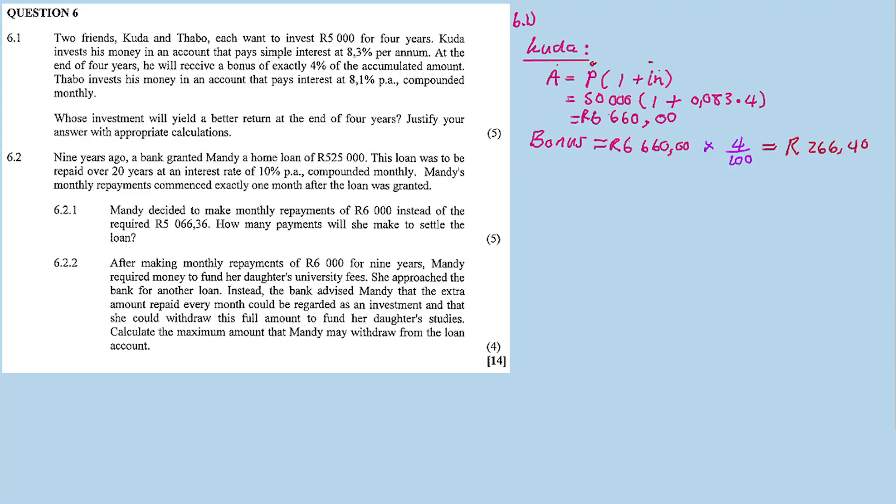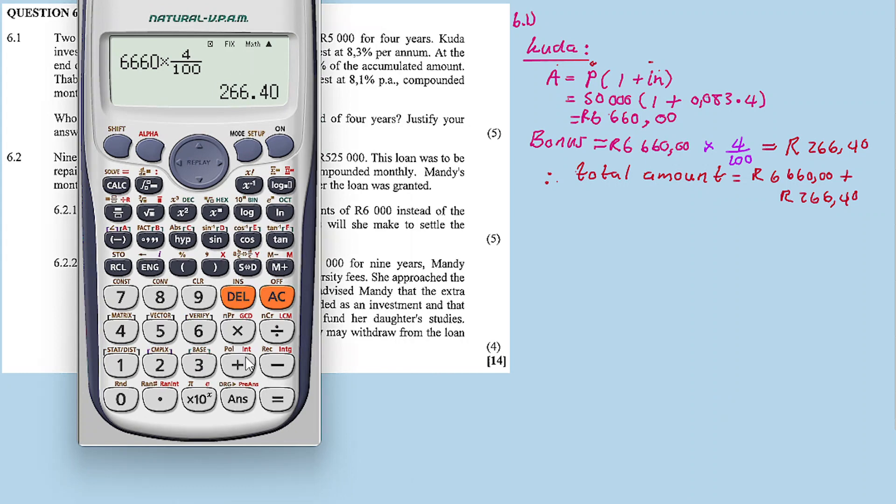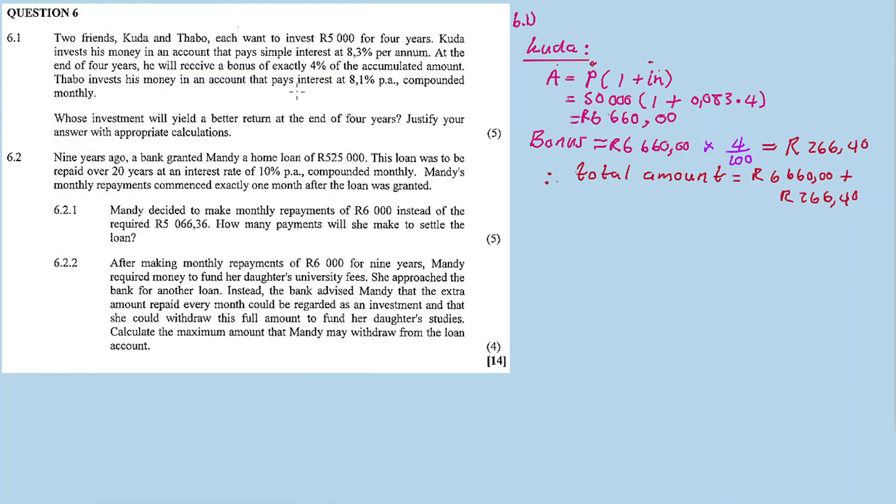So the bonus is 6660 times 4/100, which equals 266 rand and 40 cents. The total amount is the accumulated amount plus the bonus: 6660 plus 266.40 equals 6926 rand and 40 cents.